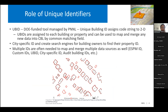Unique building identifiers are really, really critical. The DOE has funded through Pacific Northwest National Lab a unique building identifier tool, which does create a two-dimensional representation of, for example, something like a building footprint. It assigns it a code string. This gives you the opportunity to create a unique ID that can help you map and merge across multiple tax parcels and multiple addresses — and addresses can be tricky for merging. Unique identifiers are our suggested solution to that.